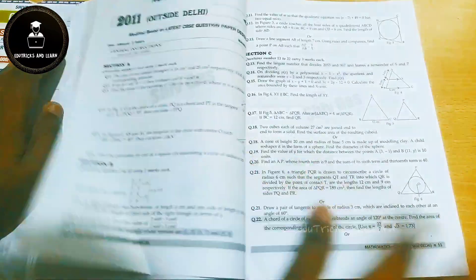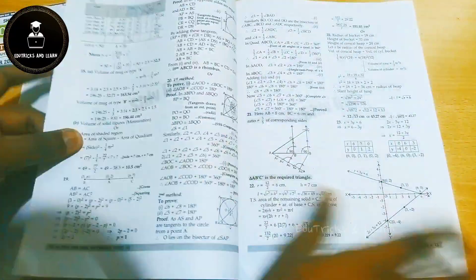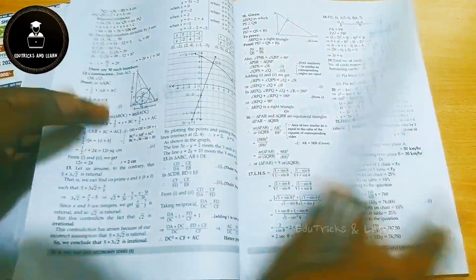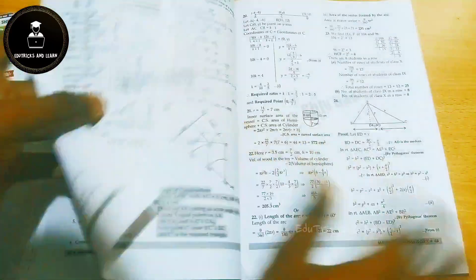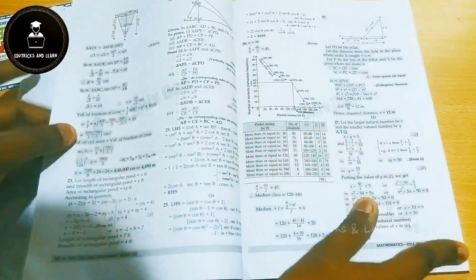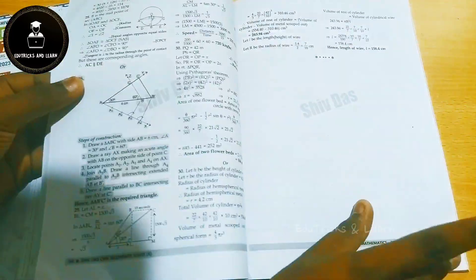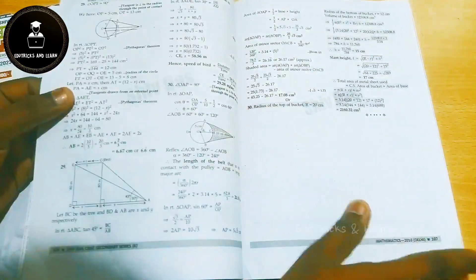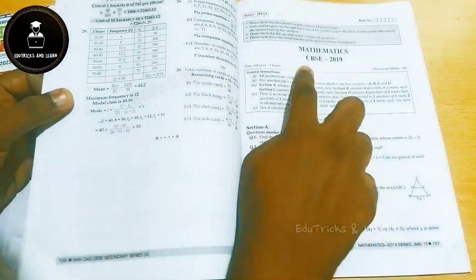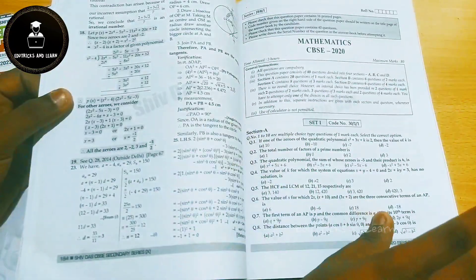They have given two papers, that is outside Delhi and inside Delhi, for each year. From 2011, they have given up to 2022 term one and term two papers. In term one paper, we all know that it's completely MCQ type, so they have given the complete MCQs. Term two also they have given subjective type questions, and under the question they have given the answer.